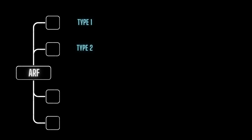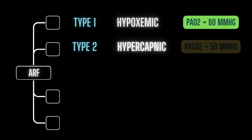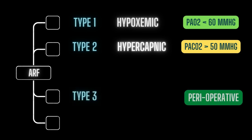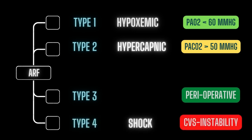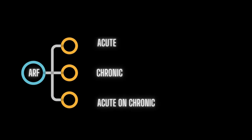Respiratory failure is classified according to blood gas abnormalities into type 1 and type 2. Type 1 is hypoxemic — PaO2 less than 60 mmHg — and type 2 is hypercapnic, referring to PaCO2 of more than 50 mmHg. There are also two more types: type 3, perioperative, generally a subset of type 1 but sometimes considered separately because it is so common; and type 4, due to shock, secondary to cardiovascular instability. Classification on the basis of onset is done based on course and duration into acute, chronic, and acute on top of chronic respiratory failure.